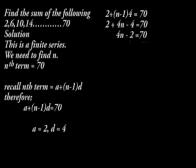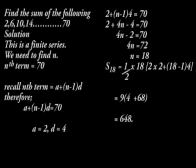Another example, find the sum of the following 2, 6, 10, 14, up to 70. In our solution, this is a finite series. We need to find out how many terms are there in the series. That is, find out what N is. Nth term is 70. Recall that Nth term is given by A plus N minus 1 times D. Therefore, A plus N minus 1 times D is 70. If we form that equation, we'll find N is equal to 18. Applying the formula, S18 is equal to a half times 18 times 2 times 2 into 18 minus 1 times 4, and the answer is 648.